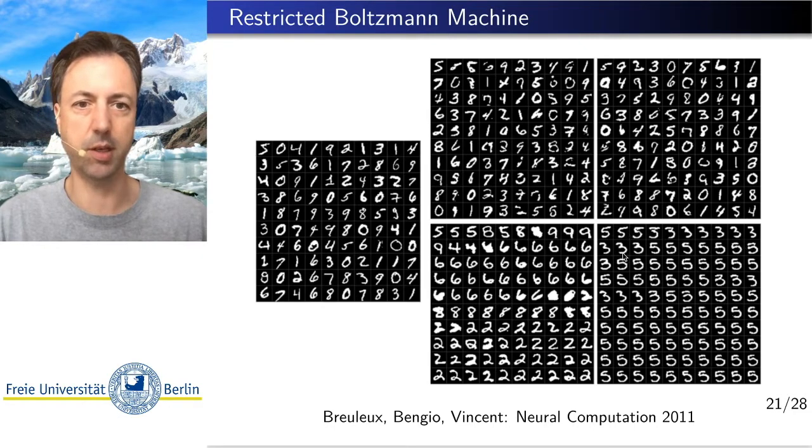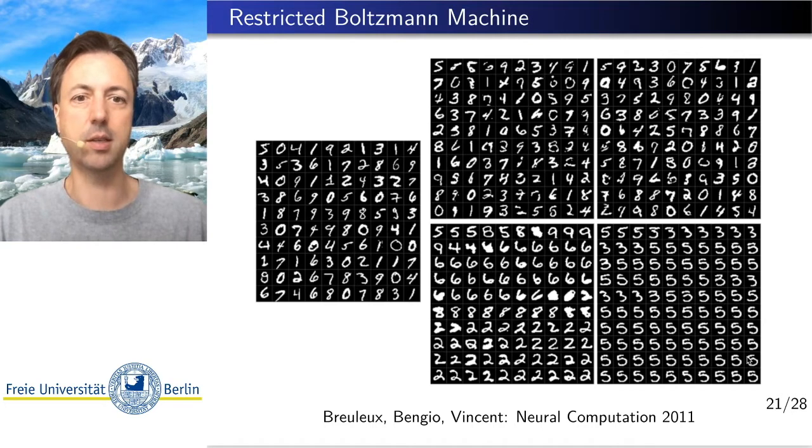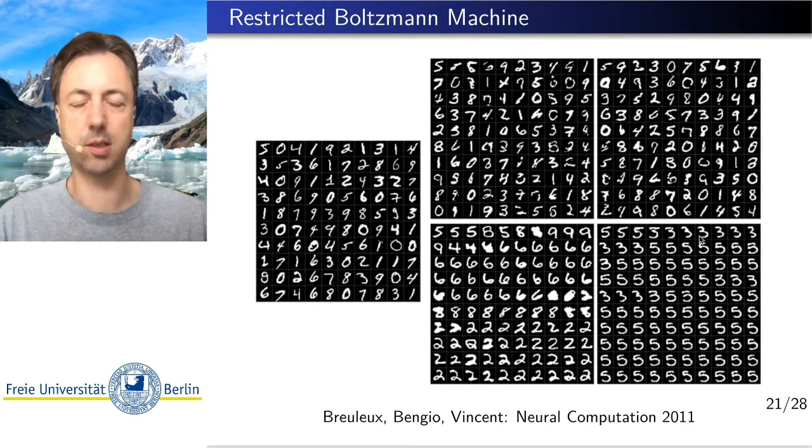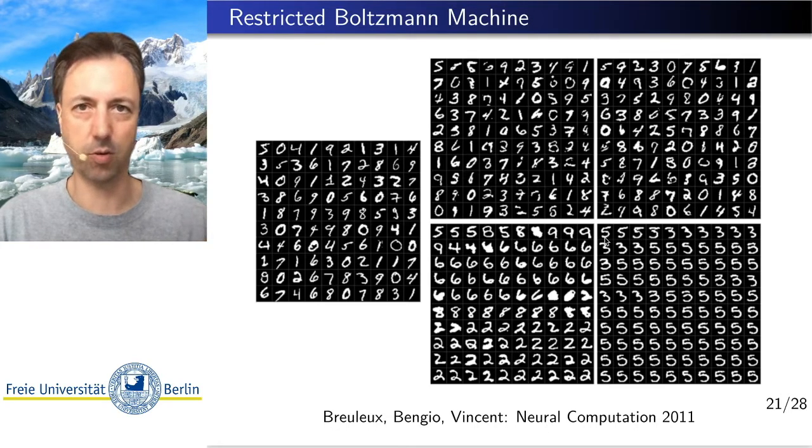You see that very extreme on the right where you stay for very long time just generating digit 5, then you flip to 3, then you flip back to 5. In those cases you may have to do a very long walk, a very long sequence of random updates of the Gibbs sampling in order to get one effectively uncorrelated sample.